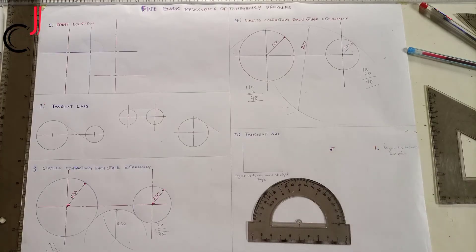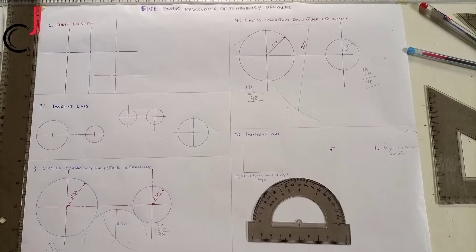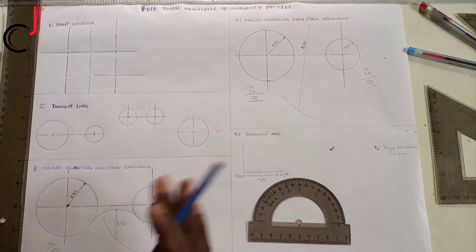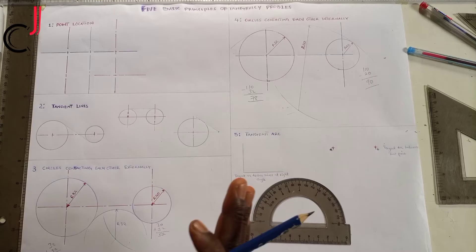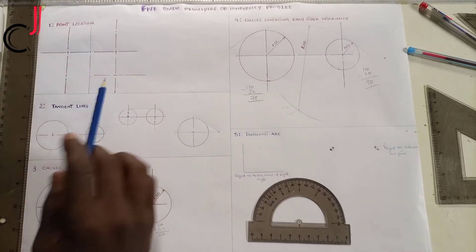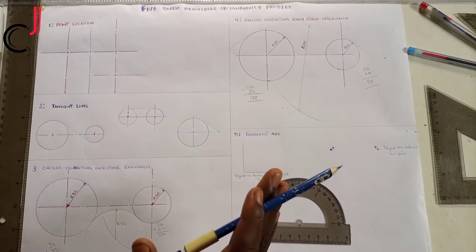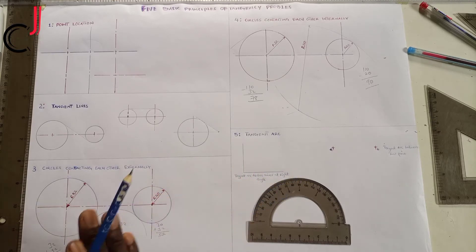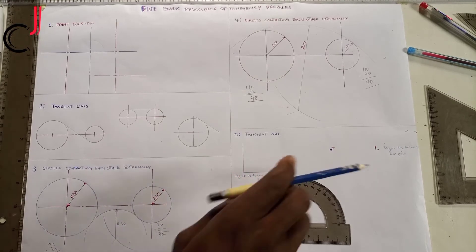Basic principle number one is points location. In every tangency problem we tend to have points location, and these are graphed in our tangency problem work. Whichever tangency problem you are given to attempt, you tend to see a vertical and a horizontal line. These lines — the point location — tell you where to locate a line, an arc, a circle, or whatever given shape you are looking for.